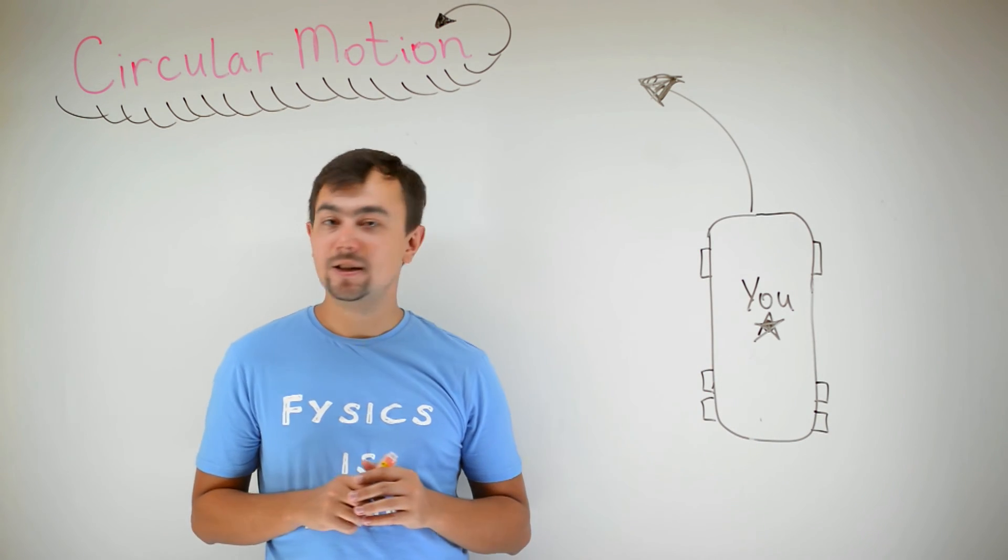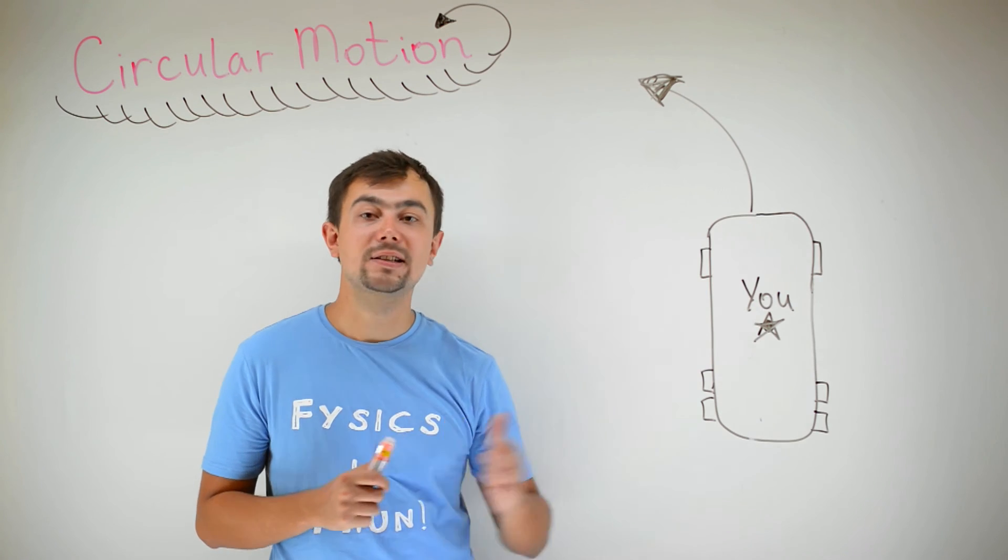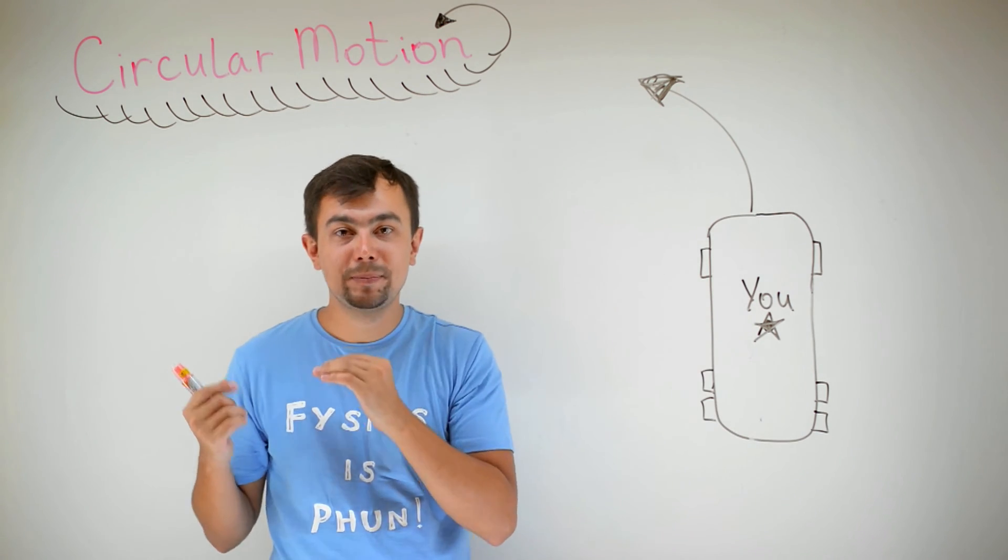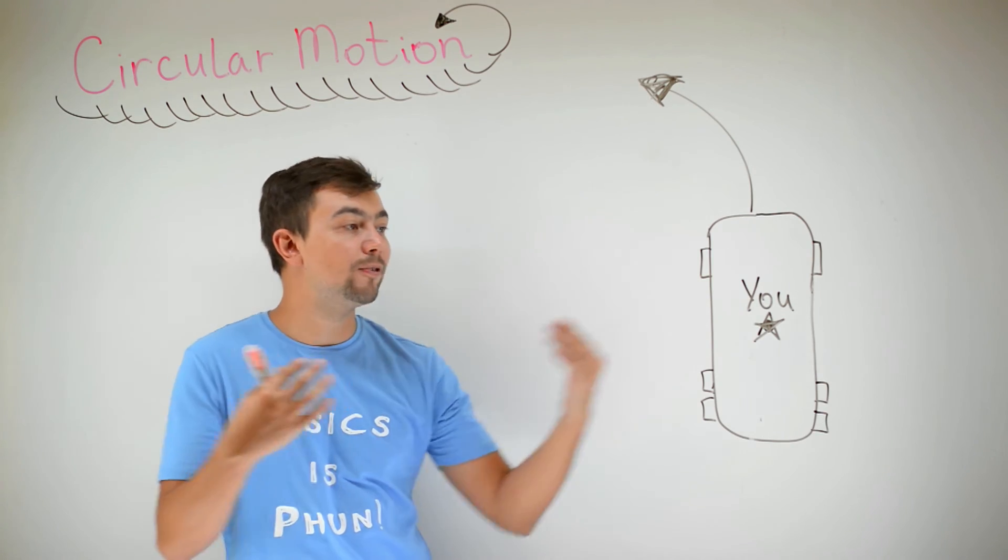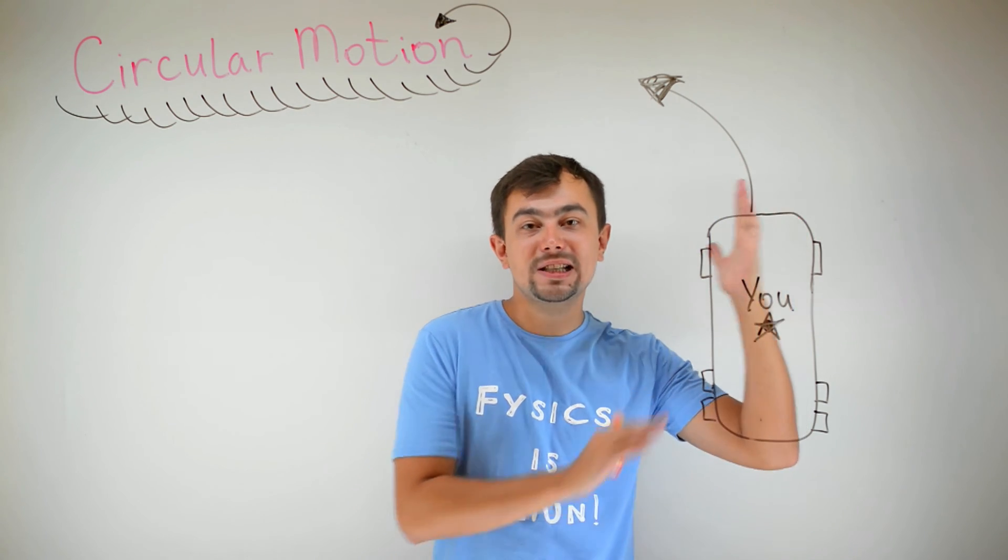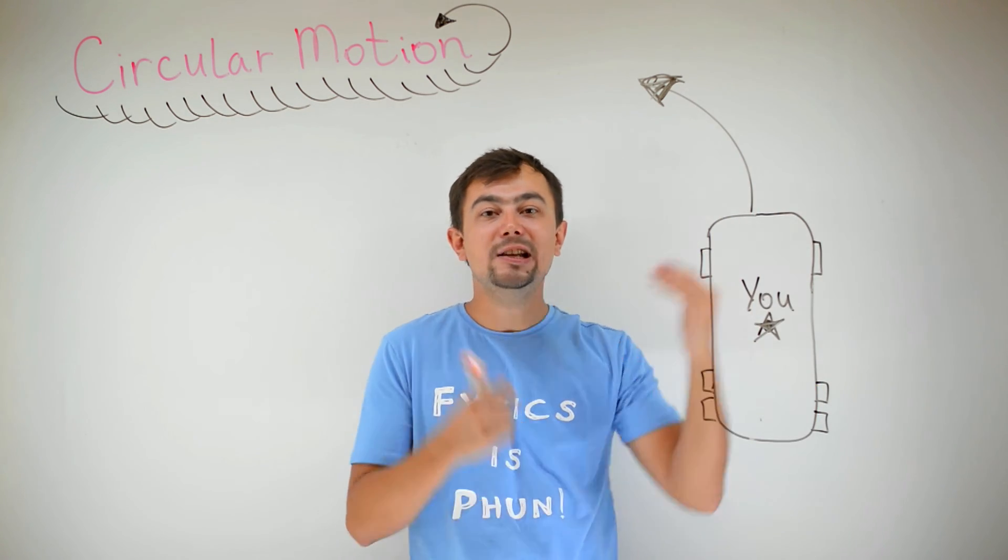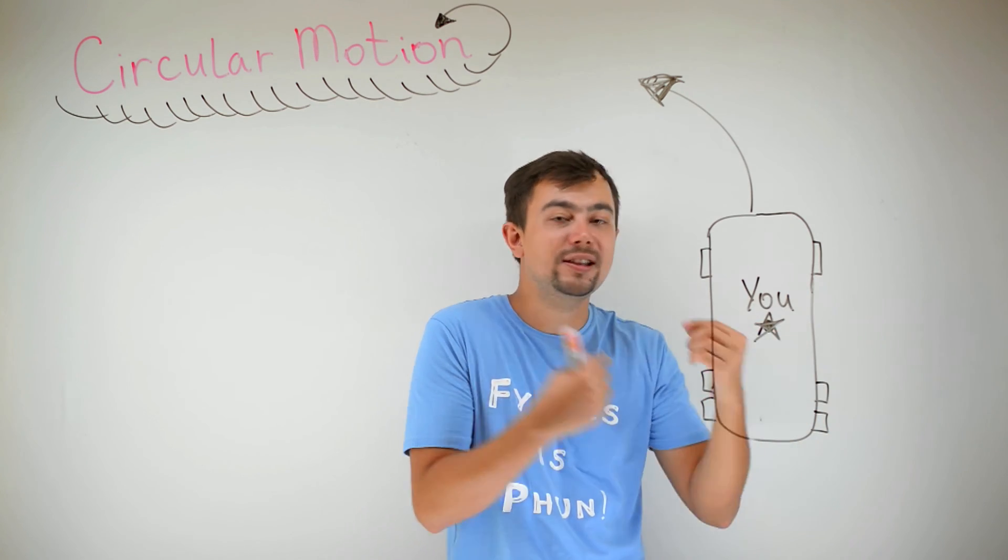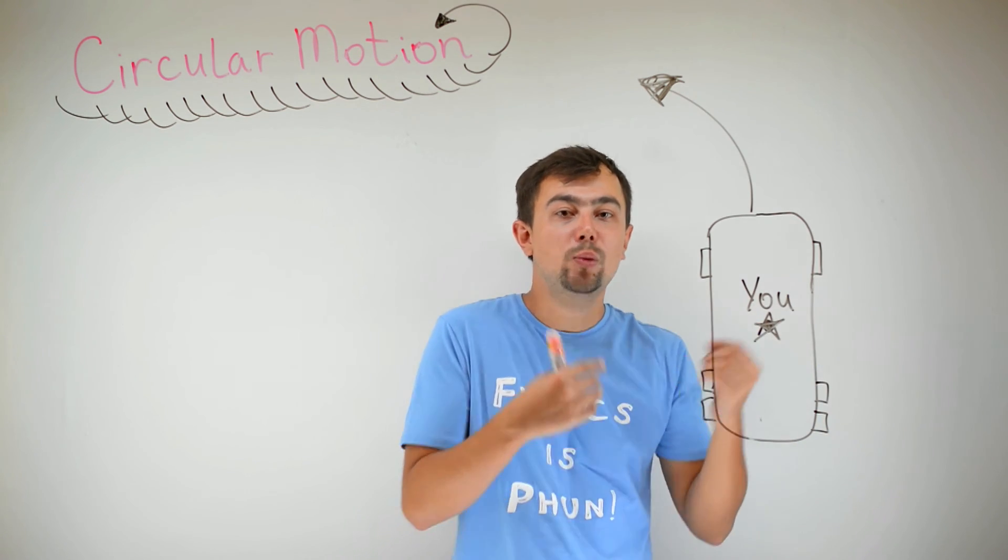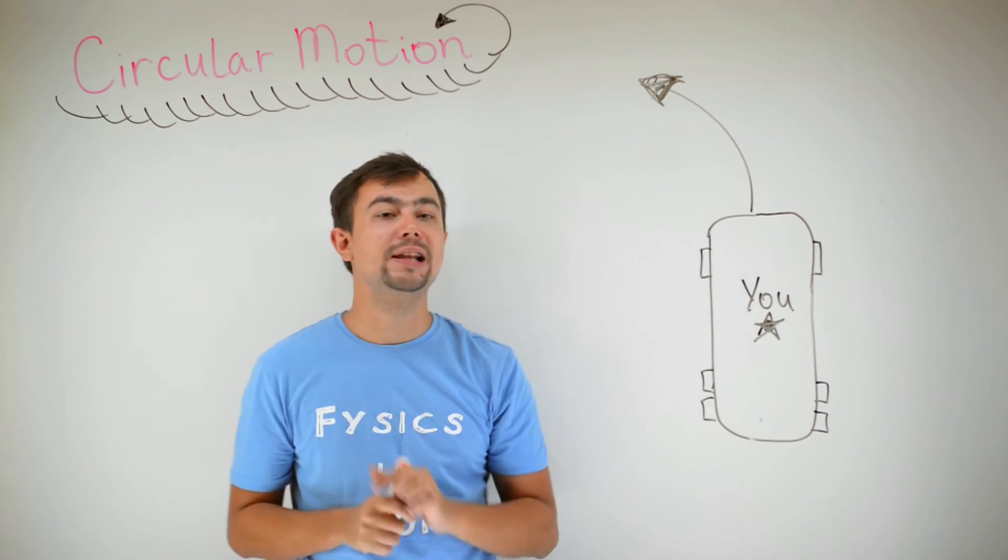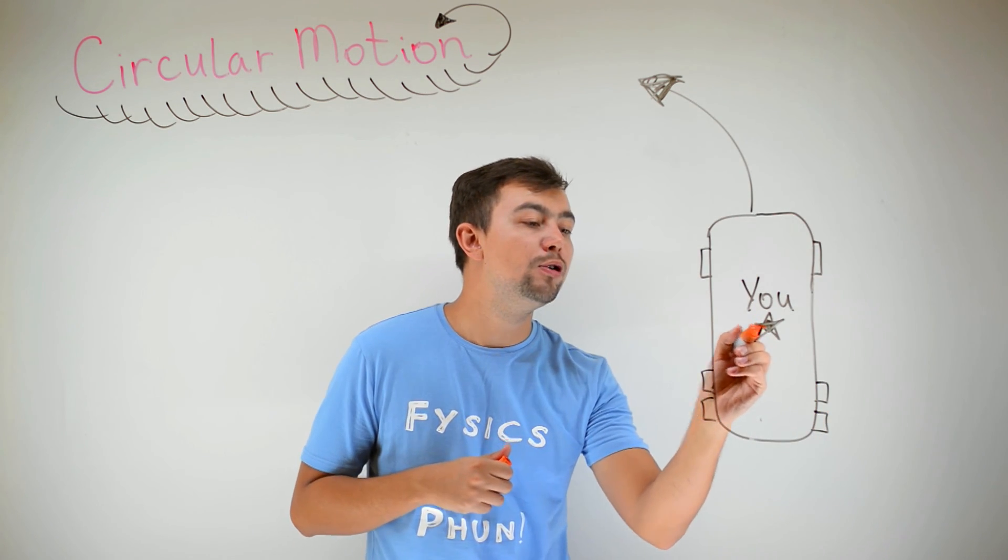Now, this is an incorrect explanation. In fact, you feel a resultant force to the left. And this resultant force is provided by the seat and by the window on the right of you because it pushes you to the left. And you feel this push from the right. And that's why you think that you are being pushed to the right where, in fact, the window is pushing you to the left, making you move in circles.